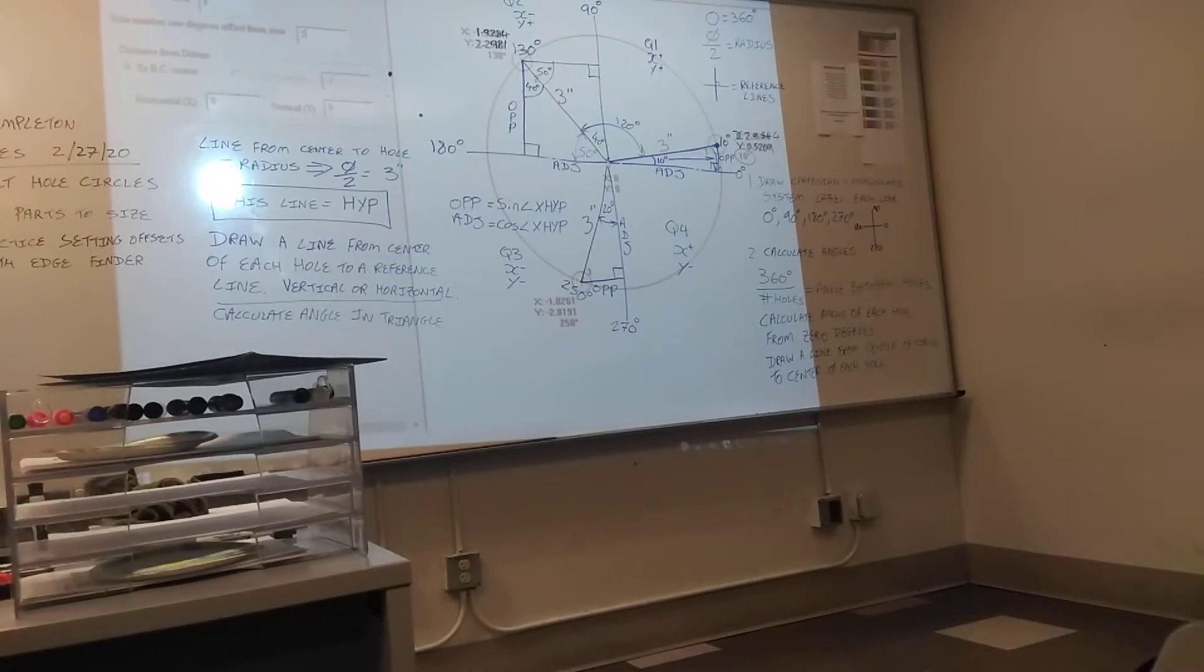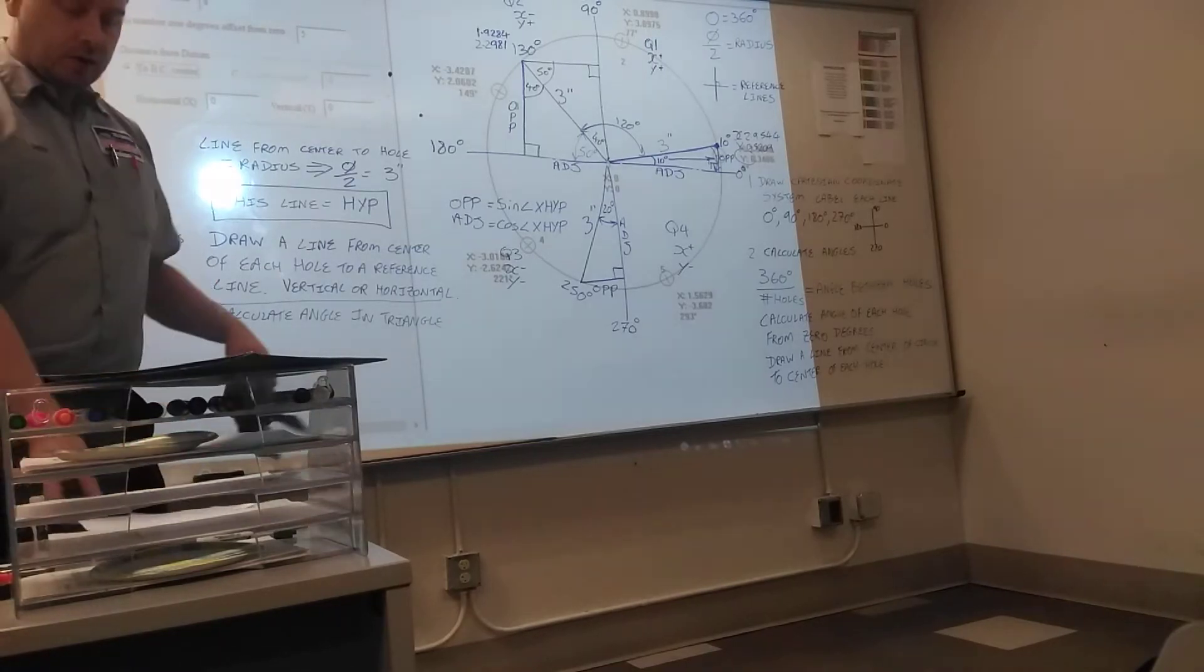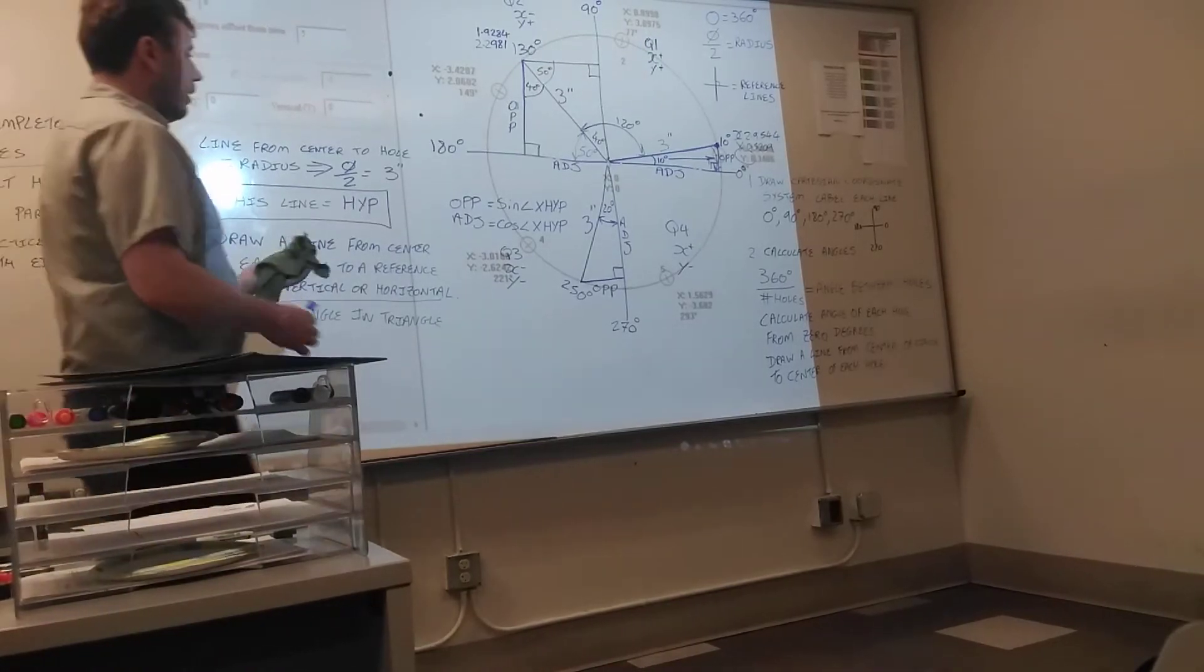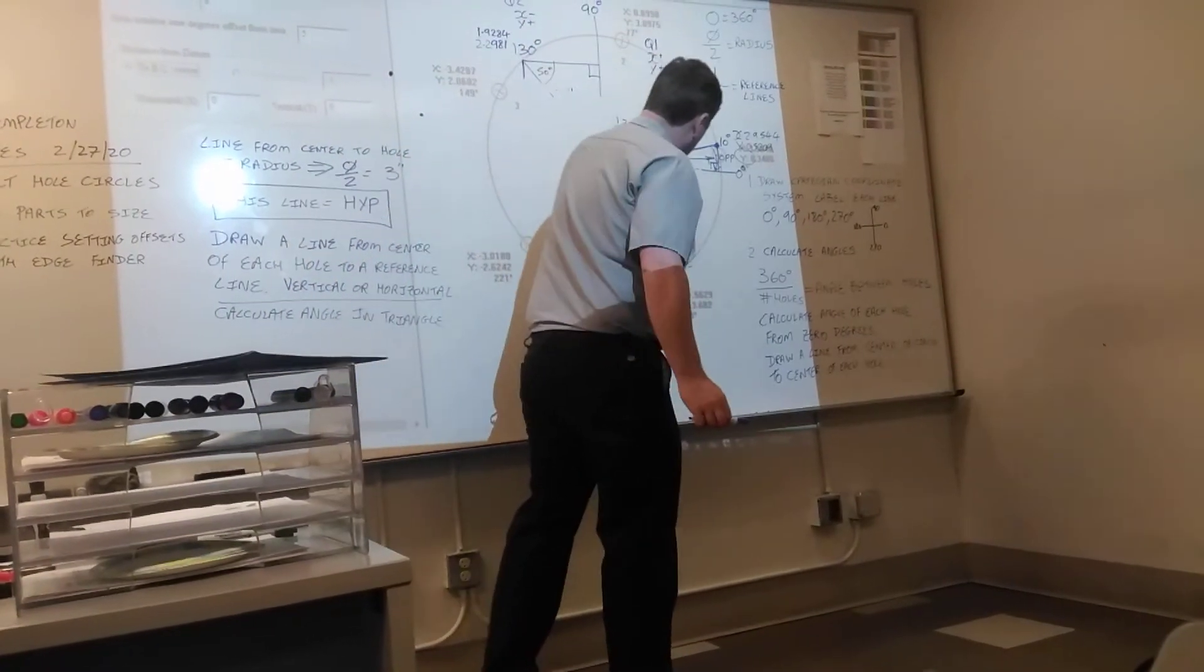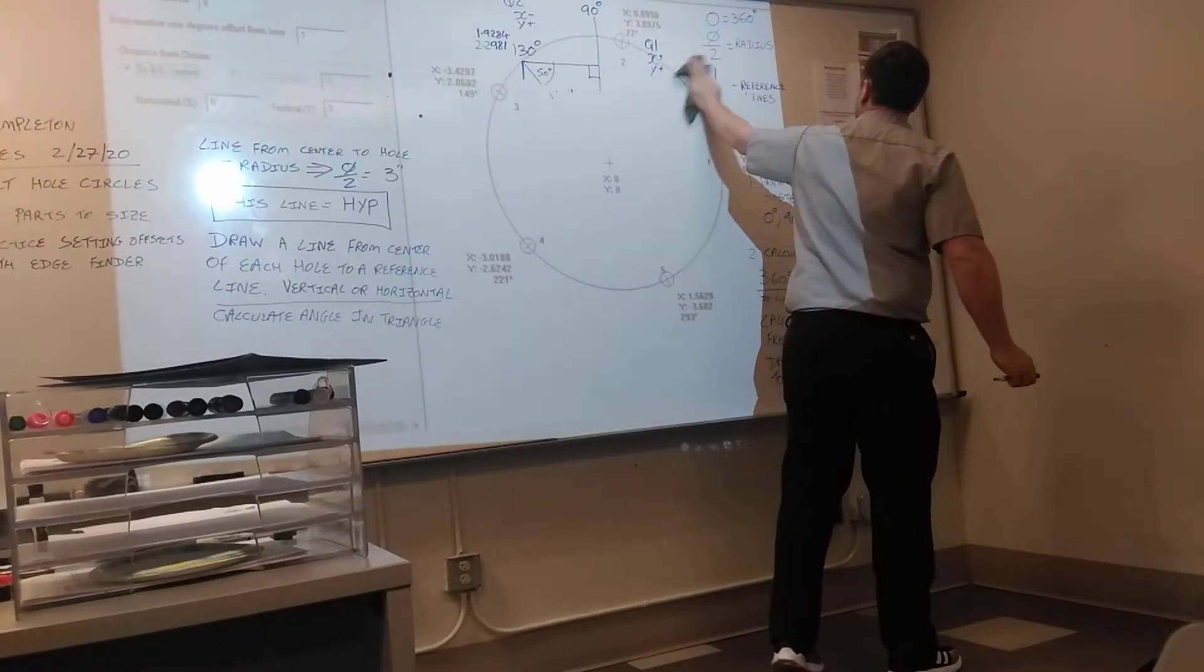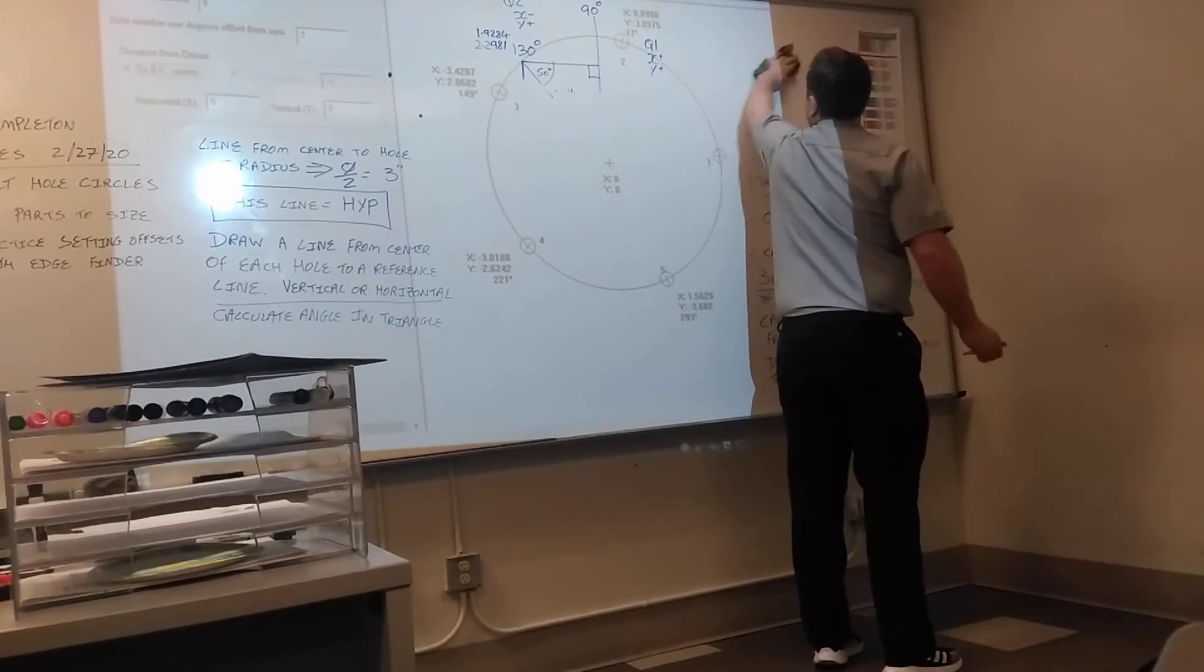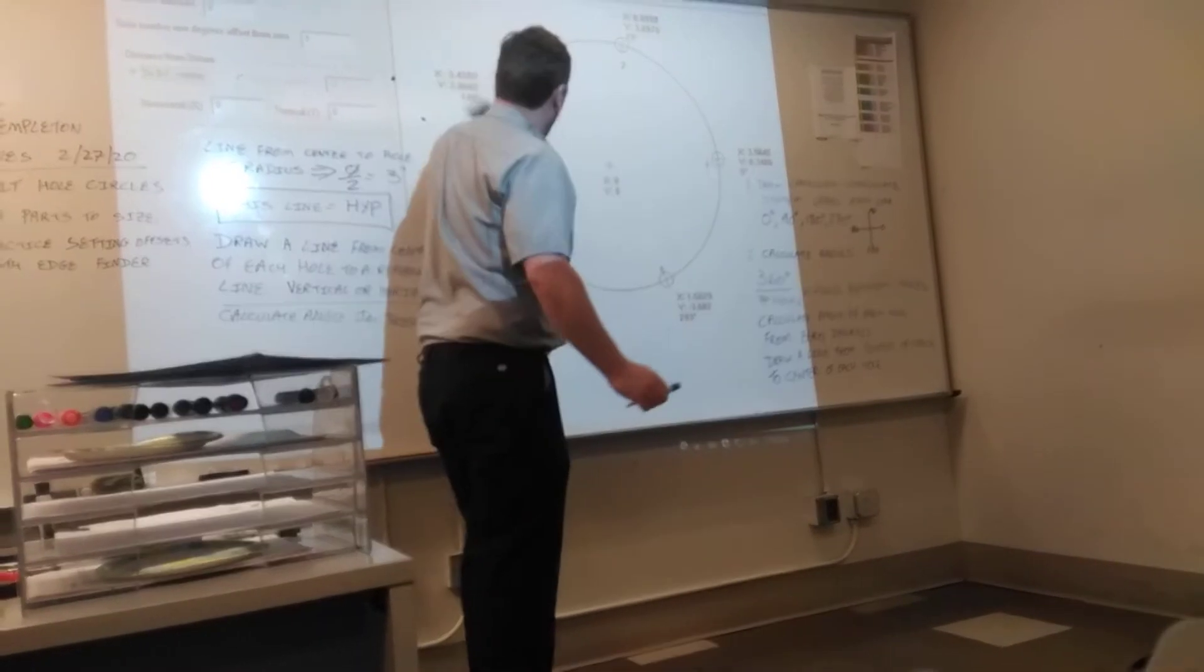The angle to the first hole is now only five degrees. So step one. What is step one? Draw a Cartesian coordinate system from the center of the circle and label your reference lines.